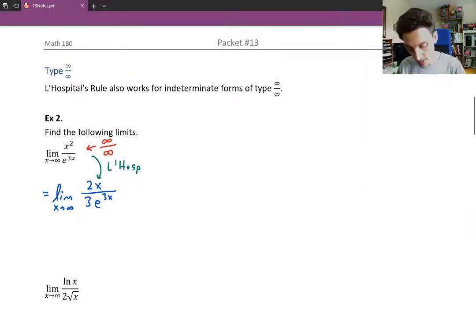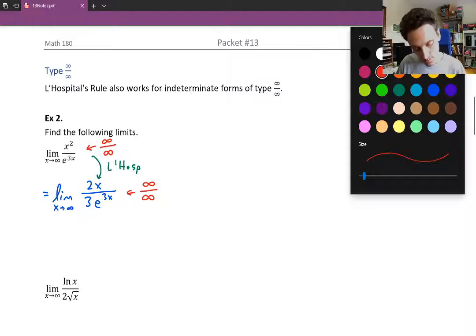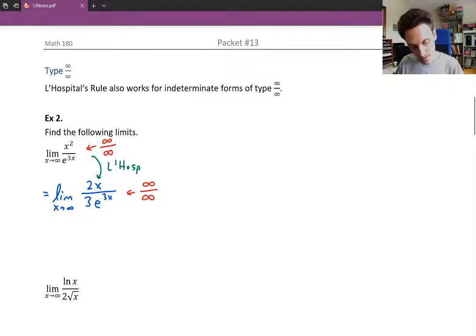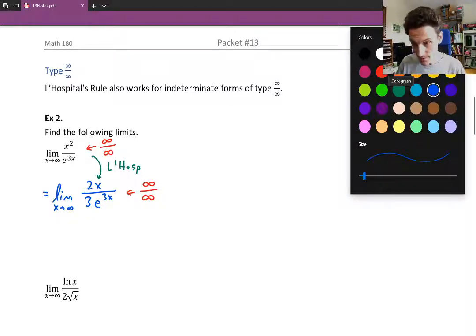Then we look at this limit as if it were just a brand new limit. You know start the problem over again and think okay how do I evaluate this limit. Let's check to see what type of limit it is. And it looks like the top is approaching infinity as x approaches infinity. The bottom is also approaching infinity as x approaches infinity. The larger x the bigger the top and the bottom both get. So we can take another L'Hopital step.